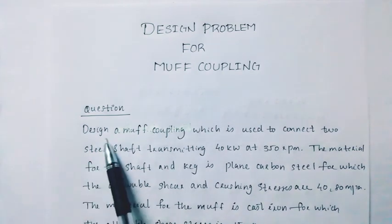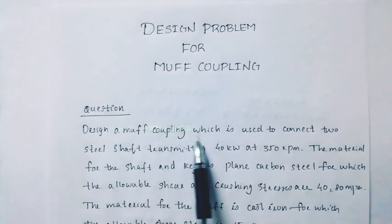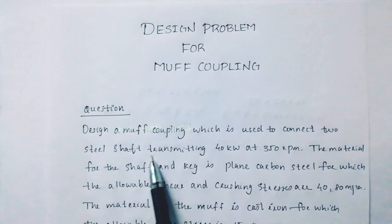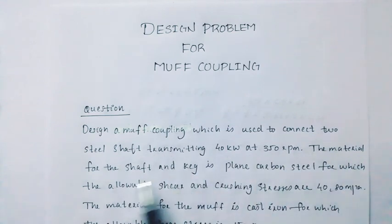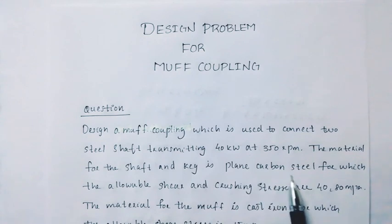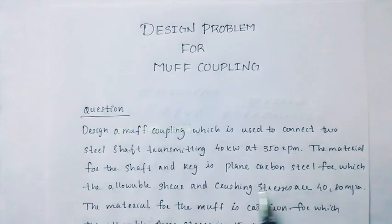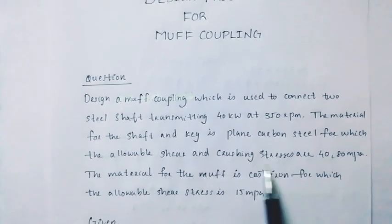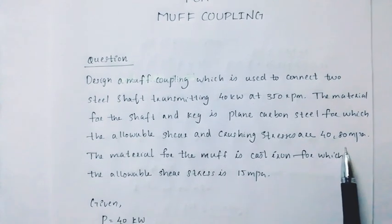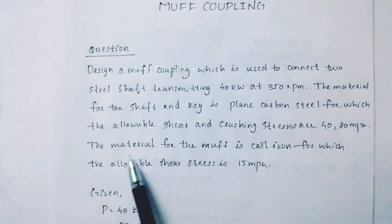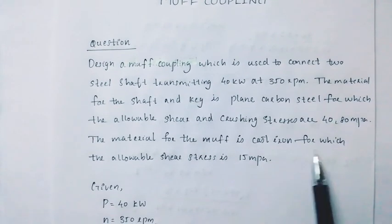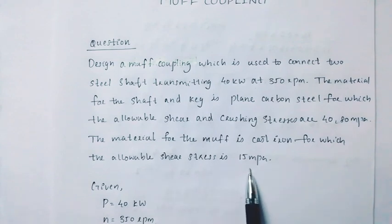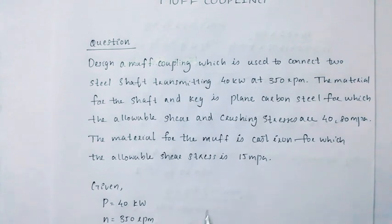Question 1. Design a muff coupling which is used to connect two steel shafts transmitting 40kW at 350rpm. The material for the shaft and key is plain carbon steel for which the allowable shear stress and crushing stresses are 40 and 80MPa. The material for the muff is cast iron for which the allowable shear stress is 15MPa.